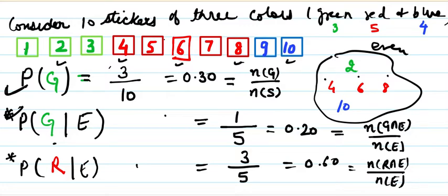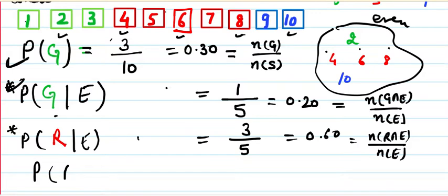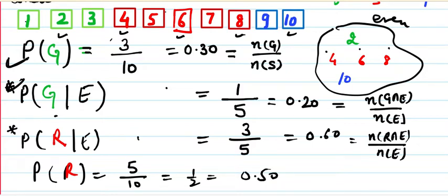Now let's check red. P(red | even) is 0.6 or 60%. The probability of red from the whole sample space: there are 5 red stickers out of 10, so P(red) = 1/2 = 50%. Since 60% ≠ 50%, red and even are not independent — they are dependent events.